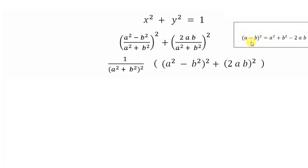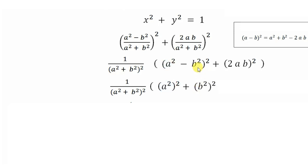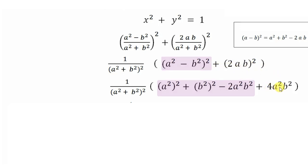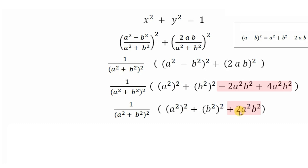We expand (a² - b²)² using the identity (A - B)² = A² + B² - 2AB, giving a⁴ + b⁴ - 2a²b². Then (2ab)² = 4a²b². Adding these: a⁴ + b⁴ - 2a²b² + 4a²b² = a⁴ + b⁴ + 2a²b².